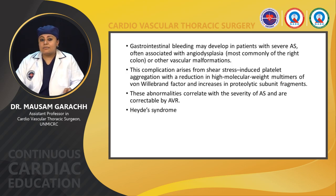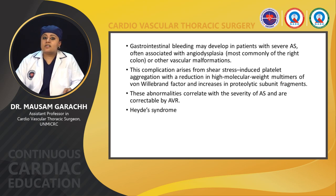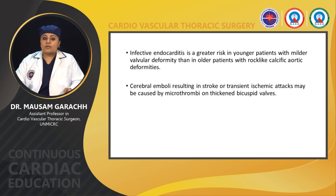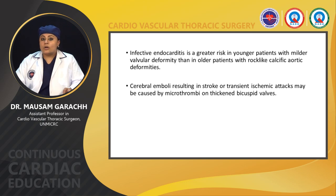Gastrointestinal bleeding may develop in patients with severe aortic stenosis, often associated with angiodysplasia, most commonly of the right colon or other vascular malformation. This complication arises from shear stress-induced platelet aggregation with reduction in high-molecular-weight multimers of von Willebrand factor and increase in proteolytic subunit fragments. These abnormalities correlate with severity of AS and are correctable by AVR — known as Heyde syndrome. Infective endocarditis is a greater risk in younger patients with mild valvular deformity than in older patients with rock-like calcific aortic deformities. Cerebral emboli resulting in stroke or TIA may be caused by microthrombi on thickened bicuspid valves.